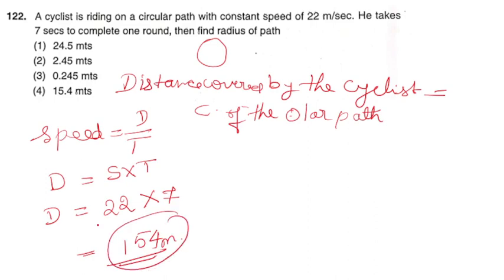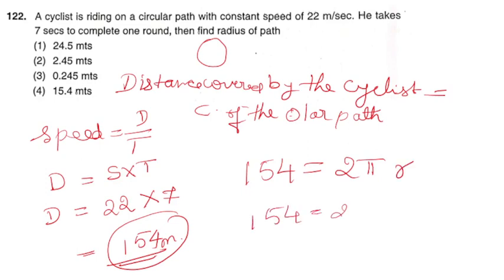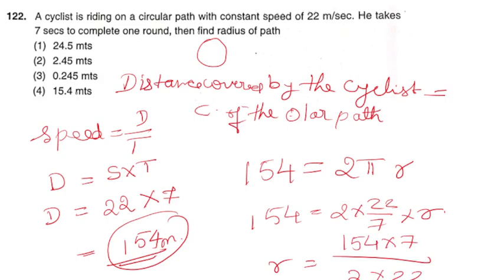Distance covered by the cyclist is 154 metres. Circumference equals 2πr, so 154 equals 2 × (22/7) × r. Therefore r equals 154 × 7 divided by 2 × 22, which gives 24.5 metres. The correct answer is option number 1: 24.5 metres.